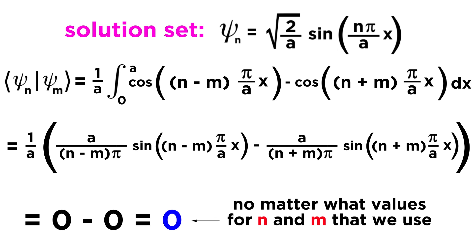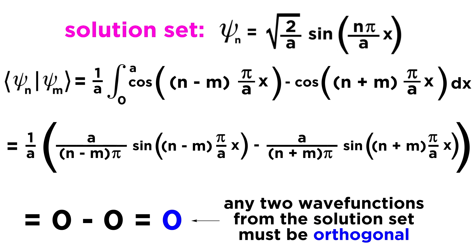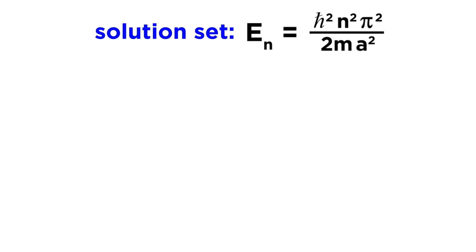So altogether, no matter what values are to be used for n and m, we get zero minus zero, which is zero. In this way, we have proven that any two wavefunctions from the solution set must be orthogonal. Now for the second realization, we turn from the wavefunctions, or eigenfunctions, over to the eigenenergies.